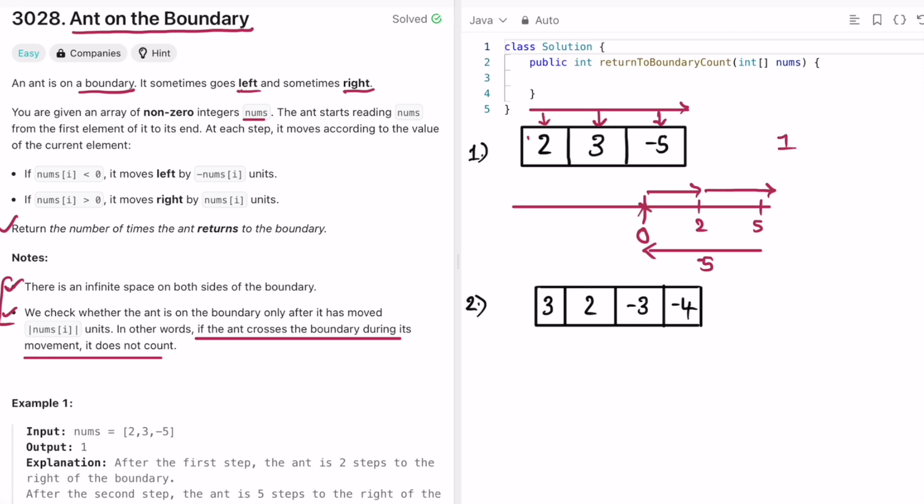That is the first time it came back to its boundary. So in the whole process the ant has come back to the boundary once. So one will be the output for the first example.